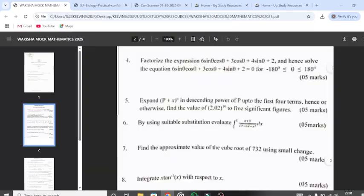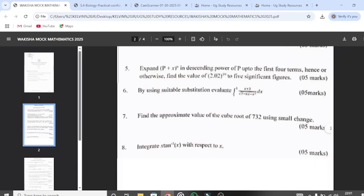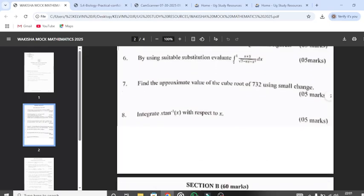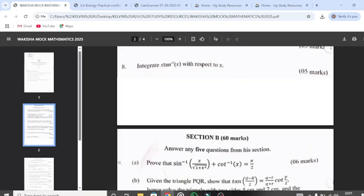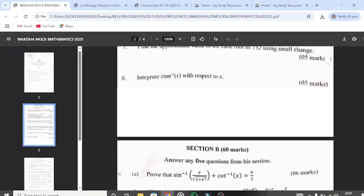Number five, this one came from binomial. Number six, this is integration. As you can see number seven, this is depreciation. Number eight, that is also trigonometry or integration with trigonometry.